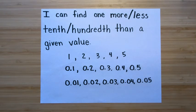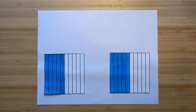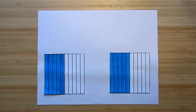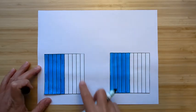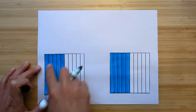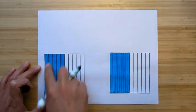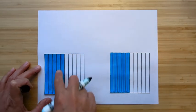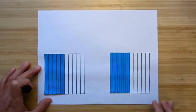All right, let's do some practice problems. The best way to practice adding one-tenth or one-hundredth, or finding one-hundredth less, is to use a visual. So here, we're going to say this is one whole, and the blue shading is the representation.